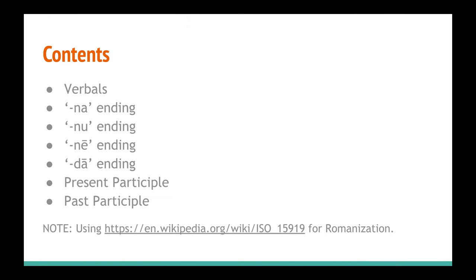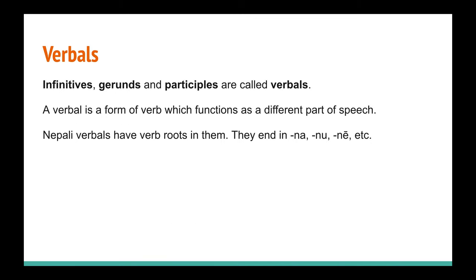Hello everyone, welcome back. I was doing another set of grammar videos. In the previous videos we covered future tense and passive voice. In this video we're going to cover verbals — infinitives, gerunds, participles — basically words formed from verbs that act as other kinds of parts of speech. Infinitives, gerunds, and participles are sometimes called verbals. A verbal is basically a form of a verb which works as a different part of speech.